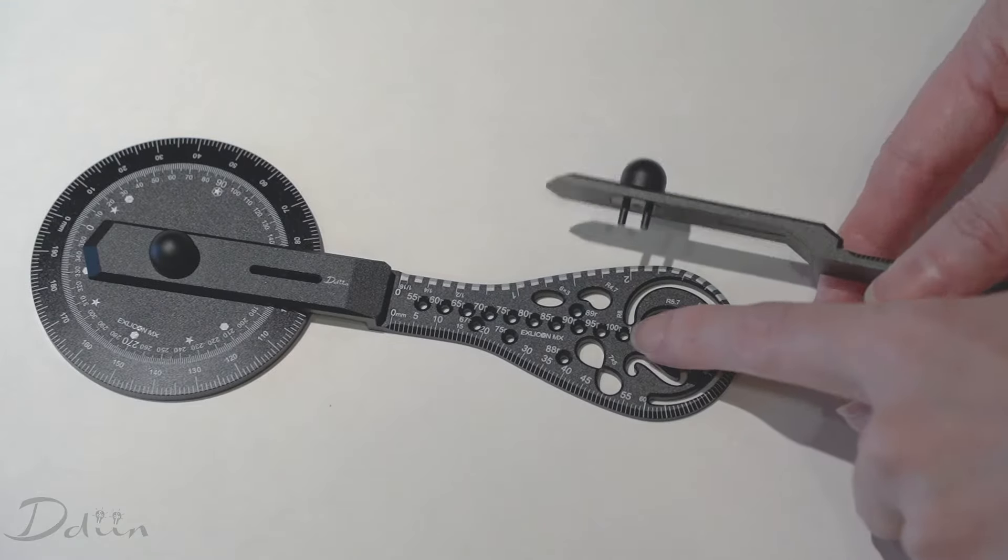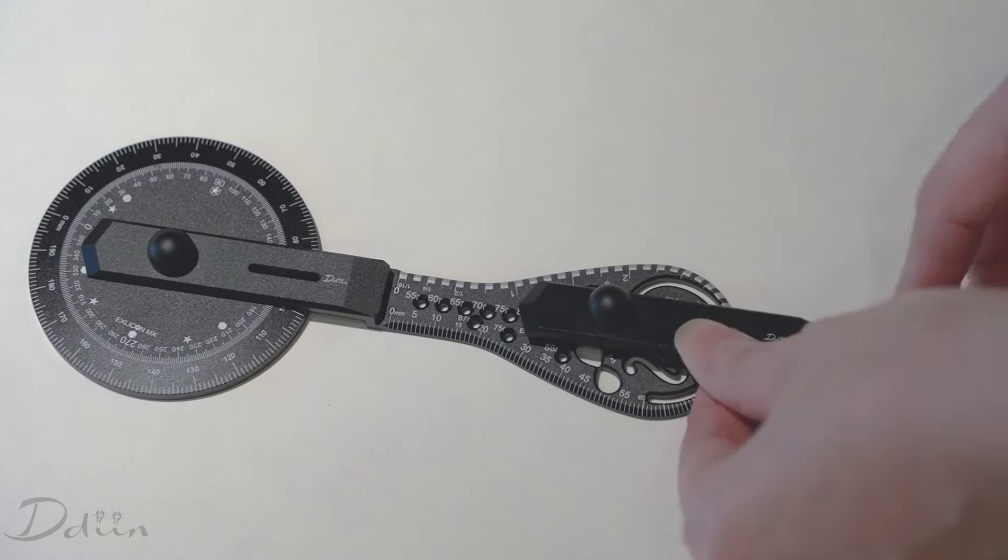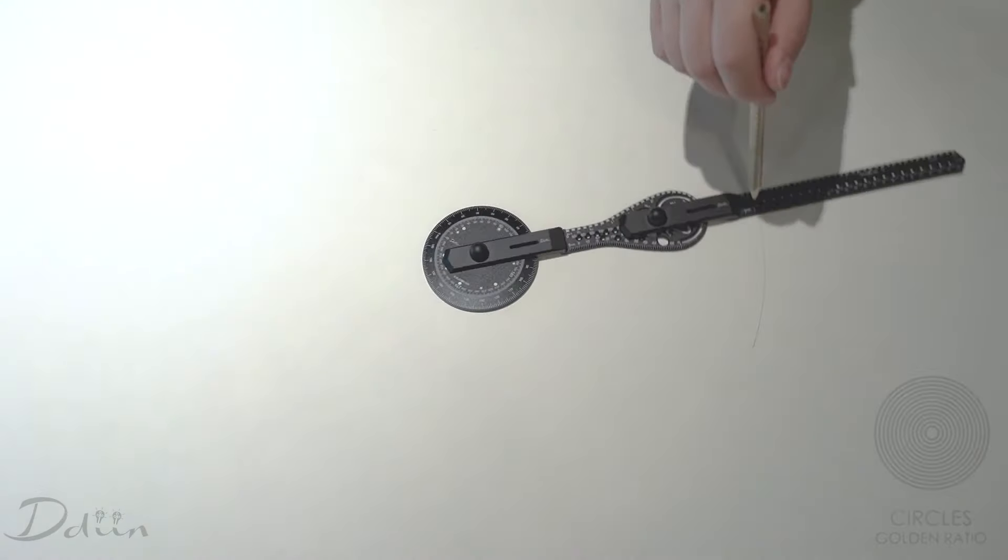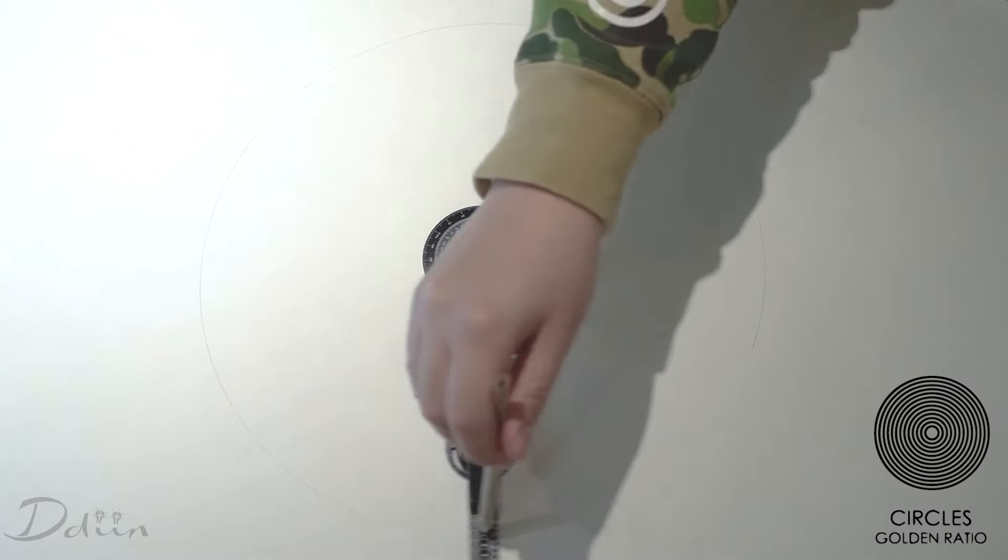To draw a bigger circle, grab another wing and attach it to the base. Using a fine-tip pen or pencil, insert it in the hole on the wing and rotate to draw a circle.